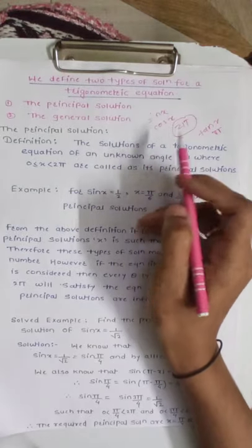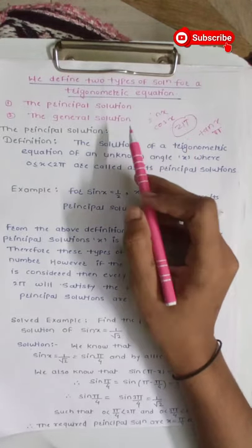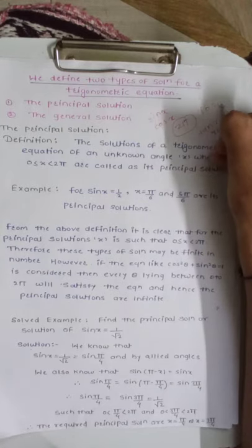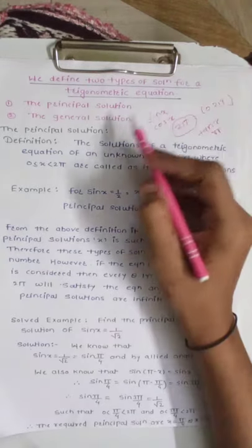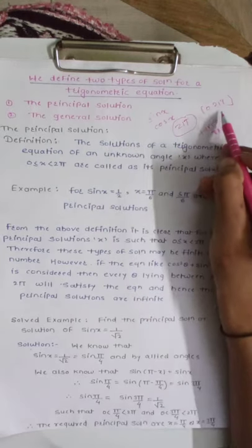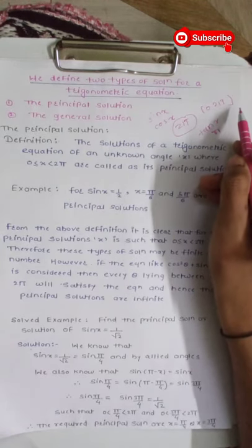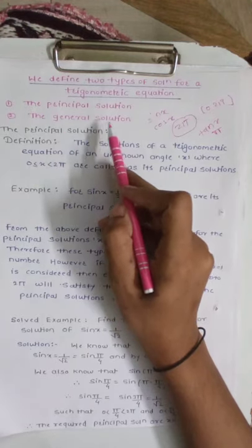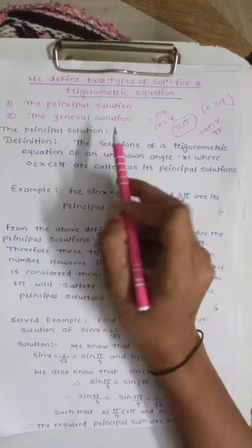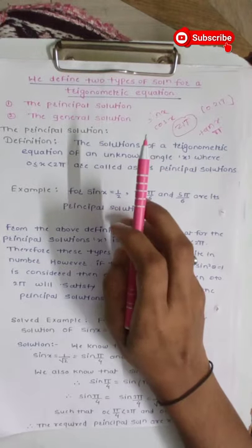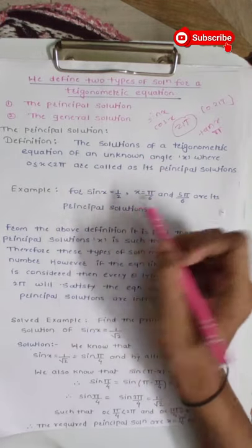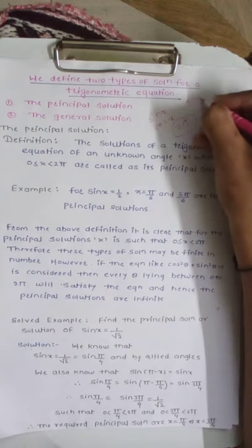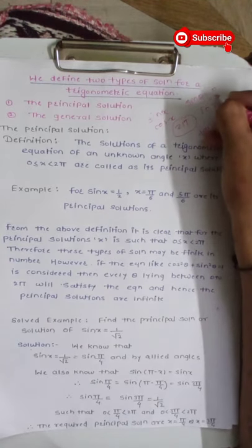The solution of a trigonometric equation that lies in the interval 0 to 2 pi is called the principal solution. The second type is the general solution. A trigonometric equation can also have a general solution, such as: sin theta is equal to 0, then theta equals n pi.